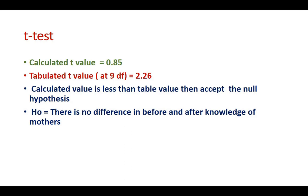For the unpaired t-test, if we have two groups — a control group and an experimental group — the calculation is the same. The only difference is in the degrees of freedom: for the unpaired t-test, degrees of freedom = (n₁ + n₂) - 2. For example, if first group has 10 and second group has 10, that is 20 - 1 = 19 degrees of freedom. Calculate the t-value, then check the table value at 19 degrees of freedom and compare. These are the t-tests used in research and statistics.